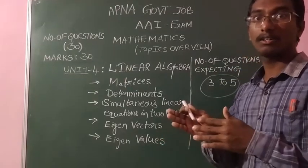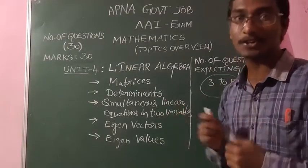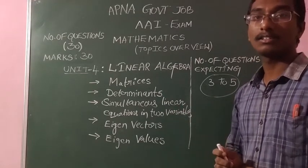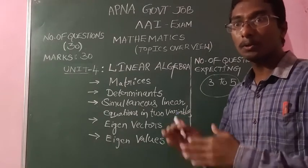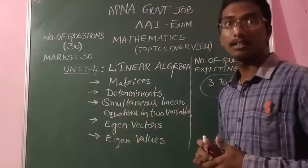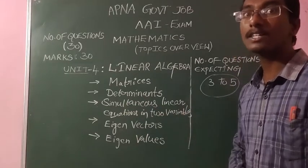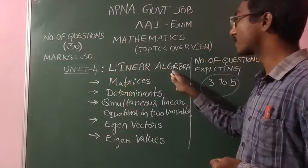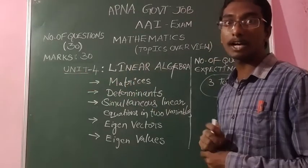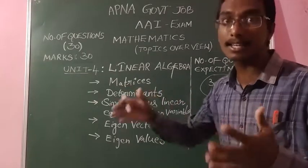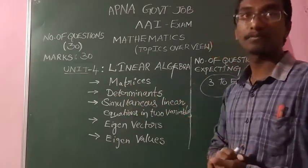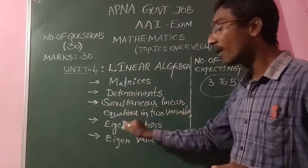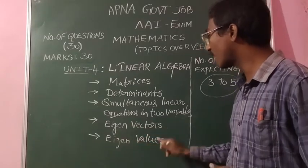Unit 1 is Sets, Relations and Functions; Unit 2 is Differentiation; Unit 3 is Integration — that covers the calculus part of mathematics. Now let me concentrate on the algebra part, Unit 4, Linear Algebra. In linear algebra, we are going to learn matrices, determinants, system of simultaneous linear equations in two variables, and eigenvectors and eigenvalues.